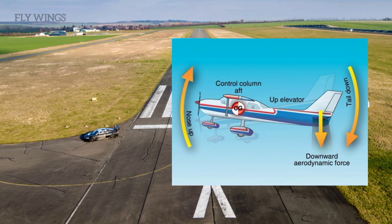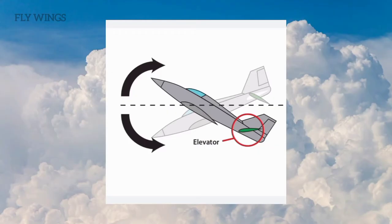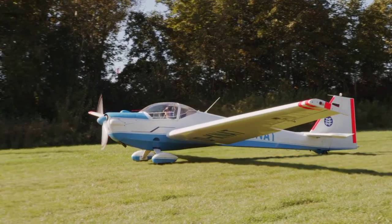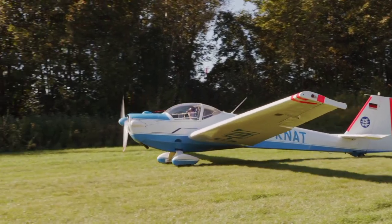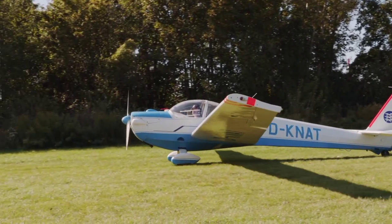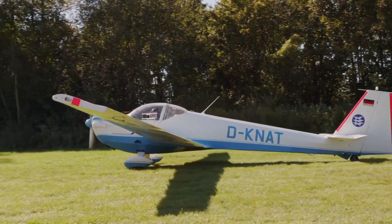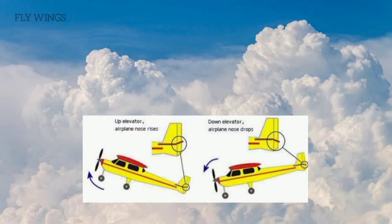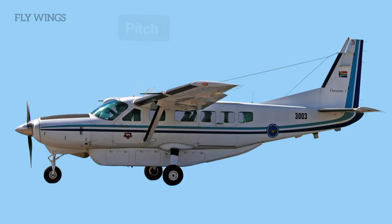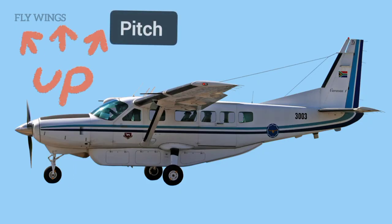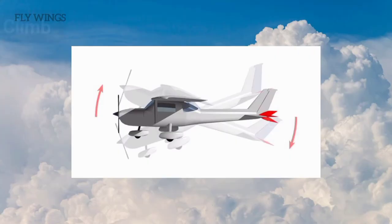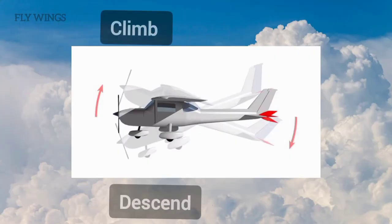The elevator helps elevate the aircraft. It is usually located on the tail of the aircraft and serves two purposes. The first is to provide stability by producing a downward force on the tail, compensating for the airplane's traditionally nose-heavy tendency. The second is to direct the nose of the aircraft either upwards or downwards — known as pitch — in order to make the airplane climb and descend.